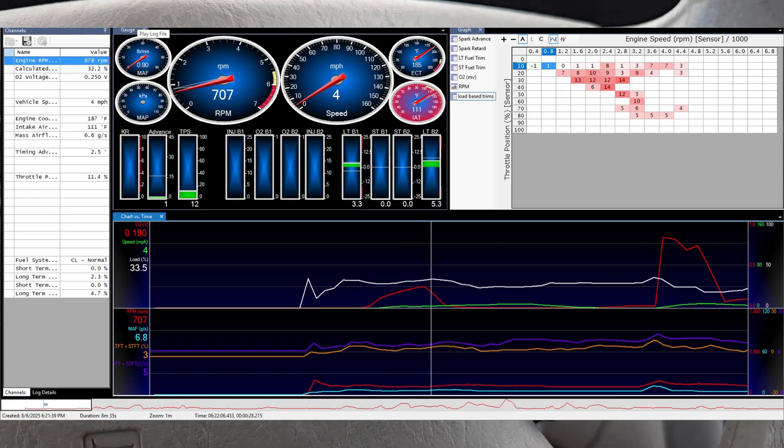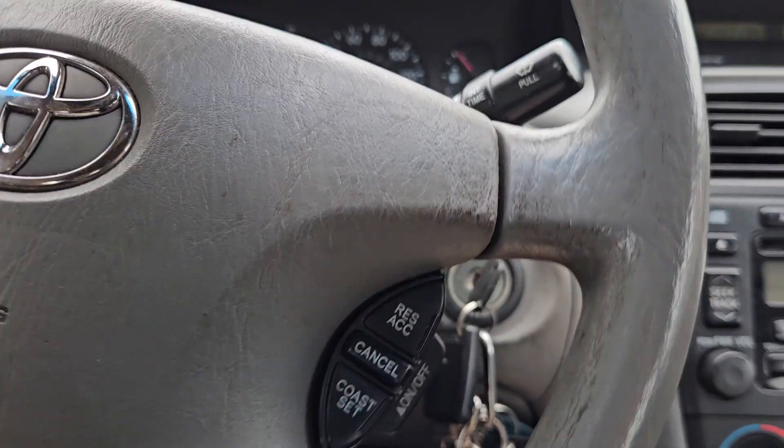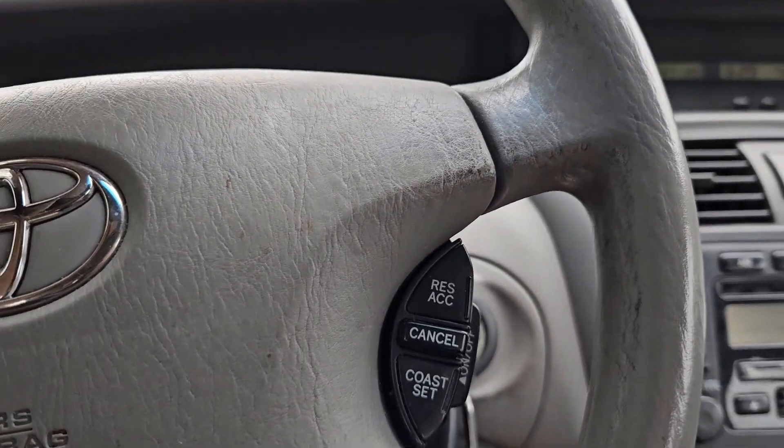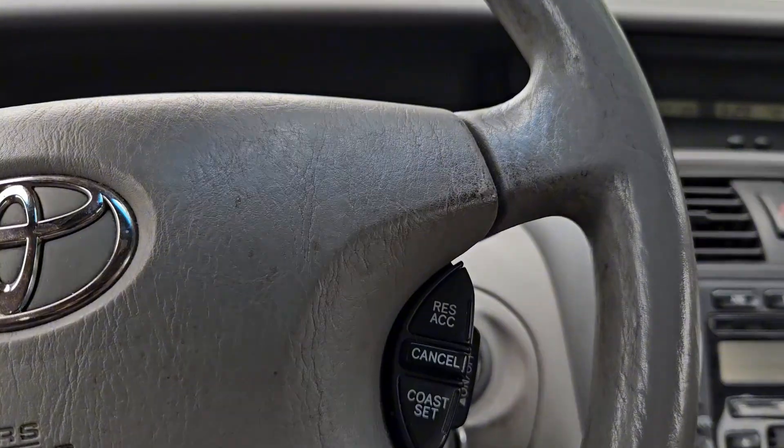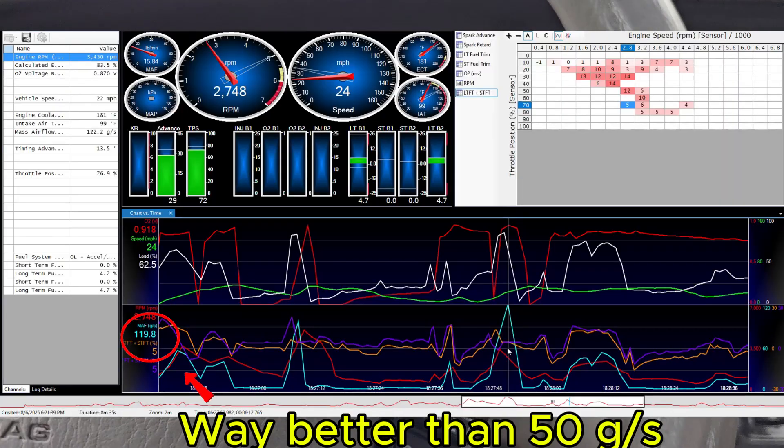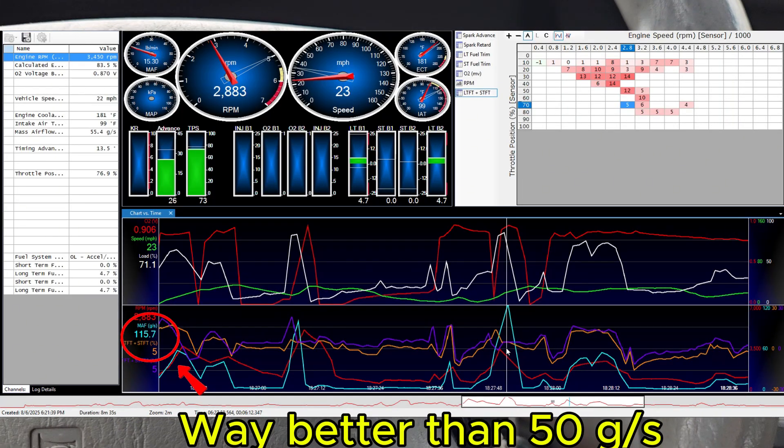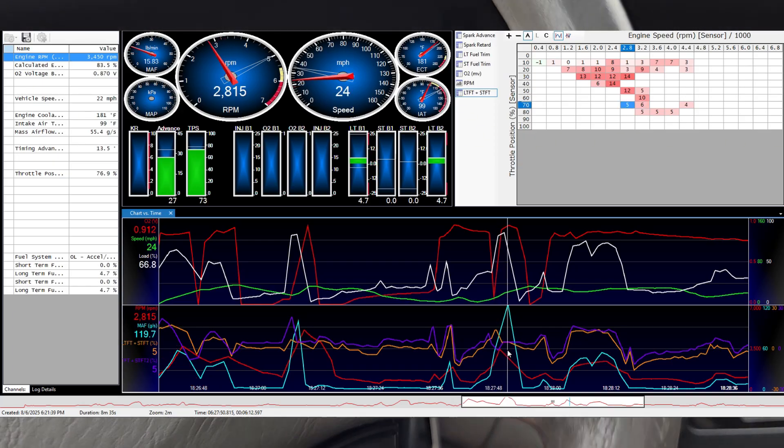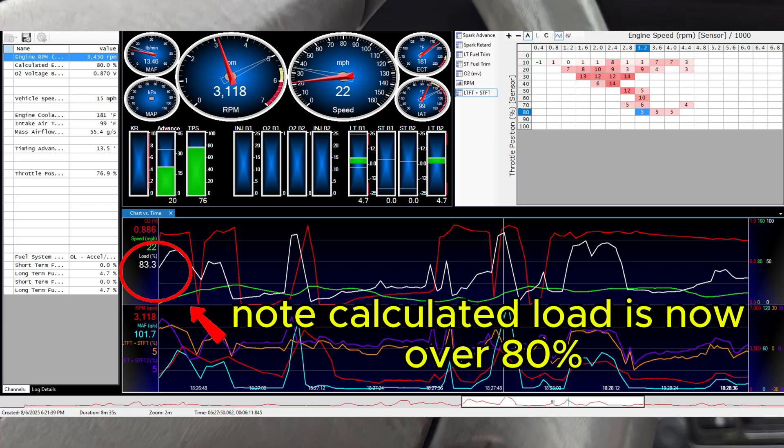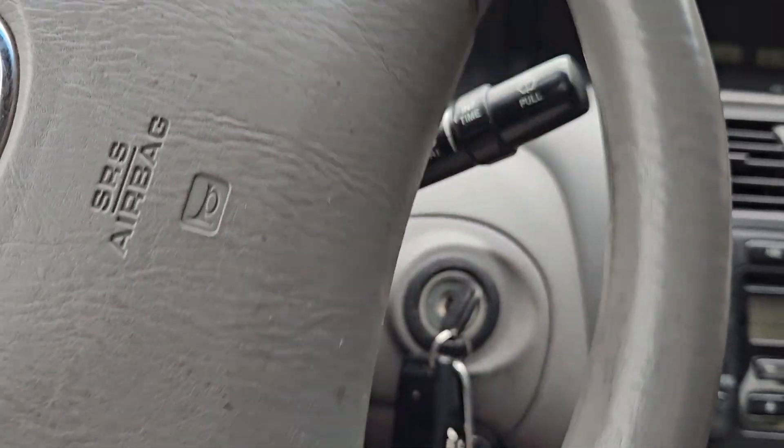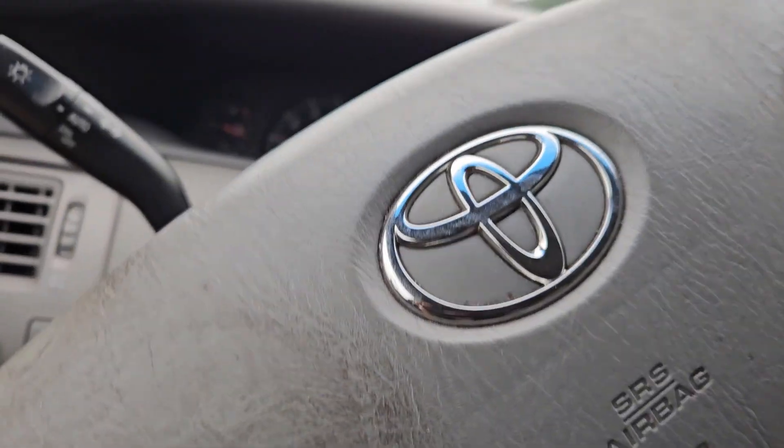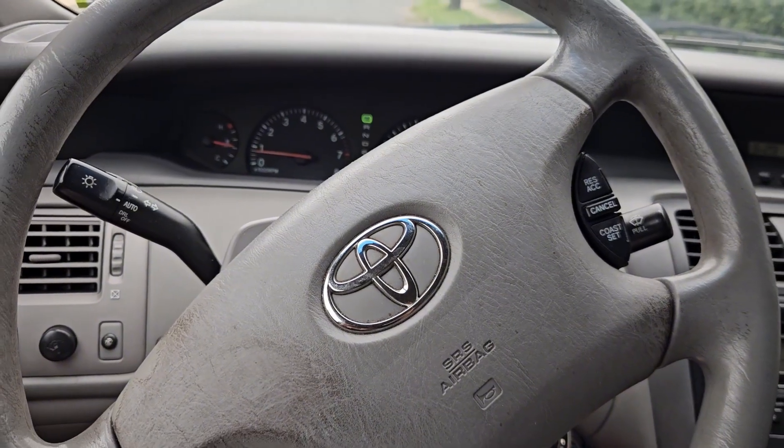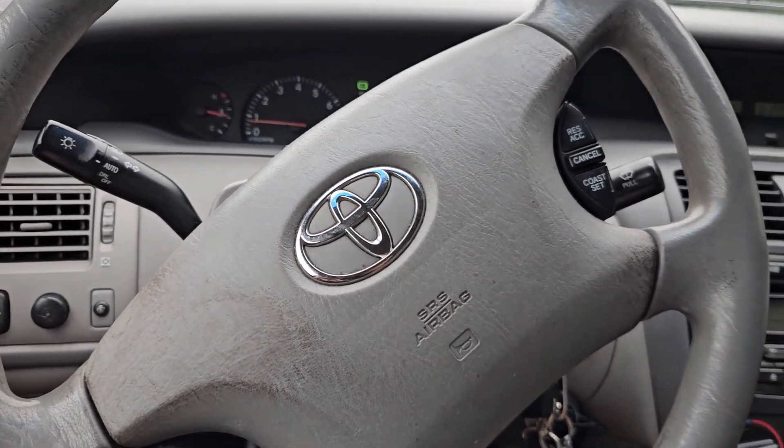I'm going to do a couple of wide open throttle runs so we can recreate our initial tests to verify that we have made improvements to the issue. I still see that we do have some lean trims, and that's to be expected because I'm not going to be able to clean that sensor out perfectly. And cleaning a mass airflow sensor is just a diagnostic step. If it does improve, then it needs a mass airflow sensor because cleaning it is usually not a permanent solution.